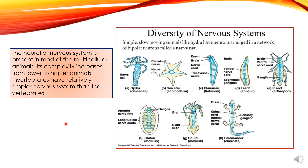The neural or nervous system is present in most multicellular animals. Its complexity increases from lower to higher animals. In hydra, there is a nerve network present. In echinoderms, radial nerves are present. In planarium, it is the first group of organisms having photoreceptors — eye-like structures — which are part of the nervous system, along with nerves. As we move to higher groups of organisms, we see the nervous system becomes much more developed.